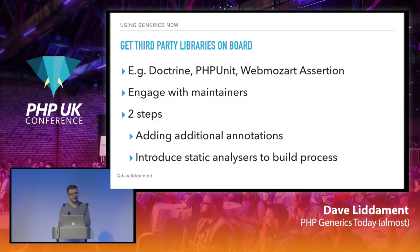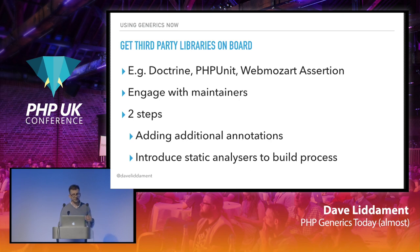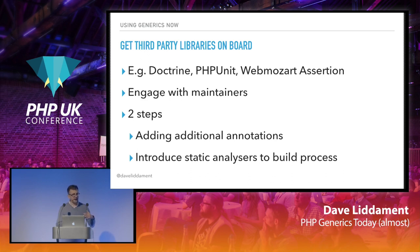The best thing we can do is try to get those writing third-party libraries on board. Some are already doing this — Doctrine, PHPUnit, and the Webmozart Assertions library are all examples. If you look at their latest versions, they have these additional annotations included. If you're going to try to get third-party libraries on board, before you do any work, engage with the maintainers to see if there would be interest. The first step is adding the additional annotations, and even better, introduce static analyzers to their build process.